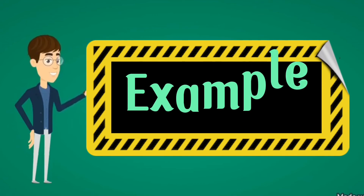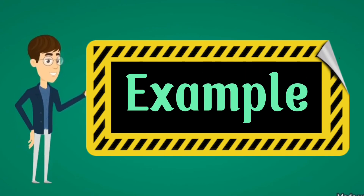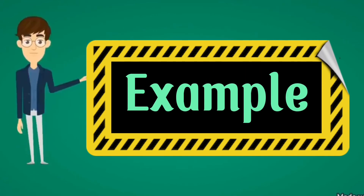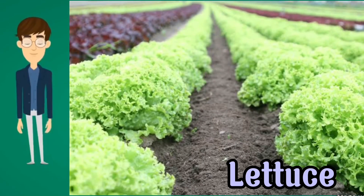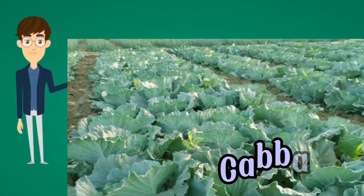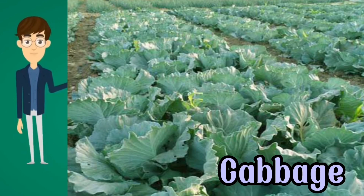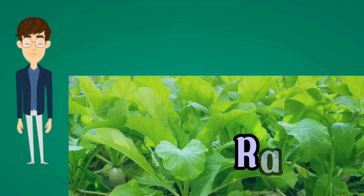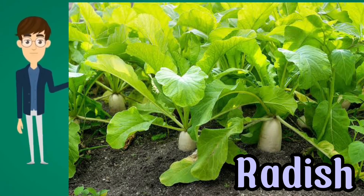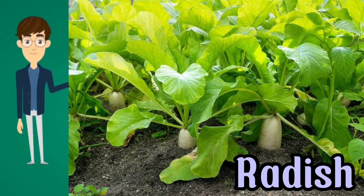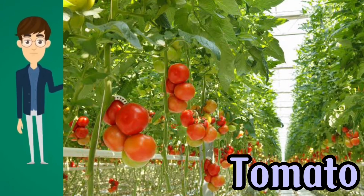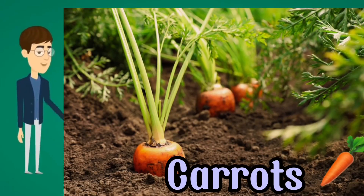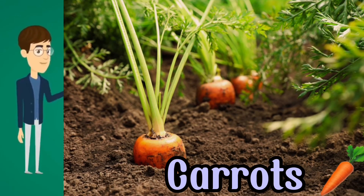Just like lettuce, cabbage, radish, tomatoes, and even carrots. Humus is the best type of soil for growing plants.